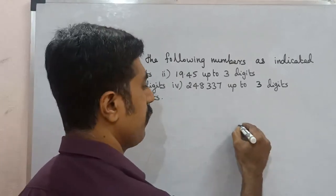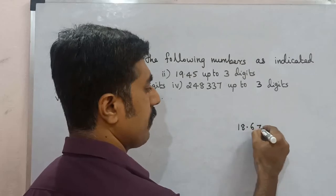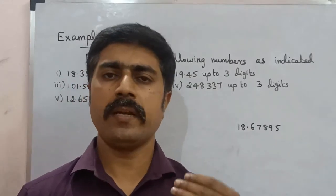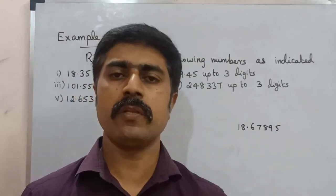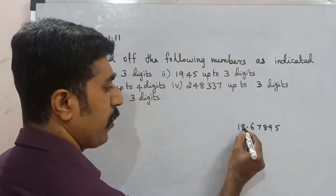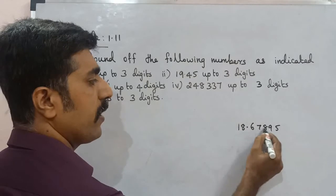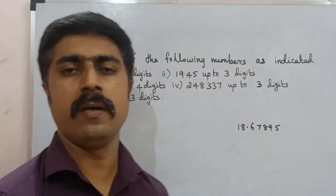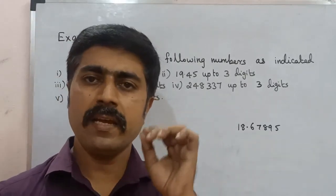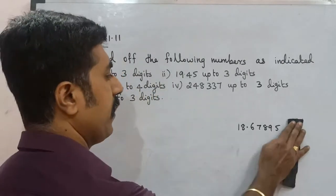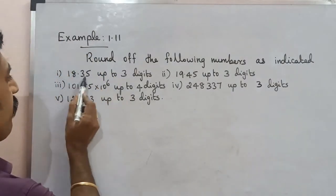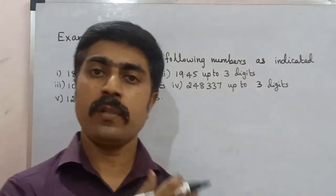For example, 18.67895 — if we perform rounding to one digit or two digits, this is the rounding off process. Round off to 3 digits means up to 3 digits. So we have to learn the rules. The rounding off process is very important. This is 3-digit round off, meaning totally 4 digits are considered. We will understand the rules.